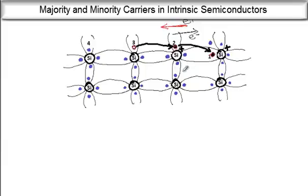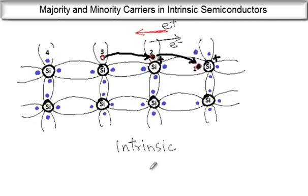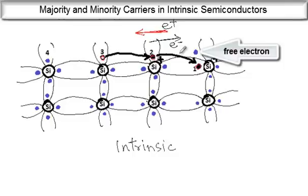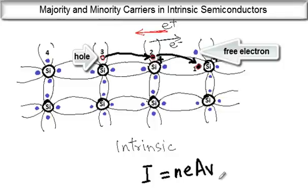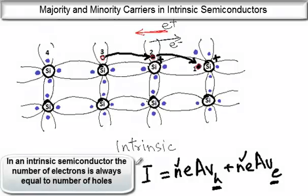In case of intrinsic semiconductors — as these are called — we have electron-hole pairs and both the electrons and the holes contribute to the flow of current. The total current i is due to both electrons and holes, and this can be written as nEAv for the holes plus nEAv for the electrons. The velocity of the holes will be much smaller than that of electrons, but the number density — the number of electrons and holes — is always equal in an intrinsic semiconductor because the electrons and holes are always created in pairs.